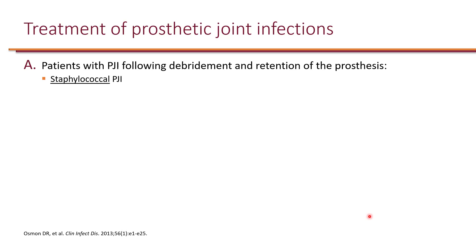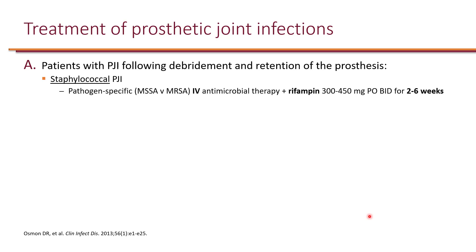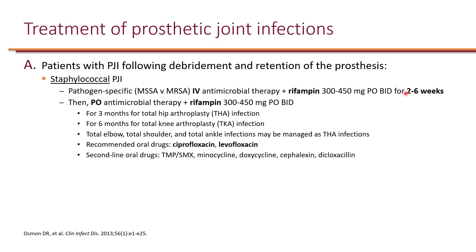For prosthetic joint infection due to staphylococcus aureus — either MSSA or MRSA based on culture results — IV antimicrobial therapy is absolutely essential for initial therapy, and this must be in combination with rifampin because of the risk of biofilm. Rifampin helps dissolve the biofilm, allowing both rifampin and the MSSA/MRSA-directed agent to penetrate the source of infection under the prosthesis. This combination must be continued for two to six weeks.